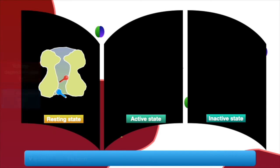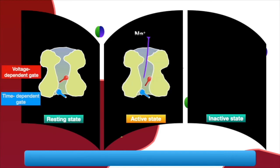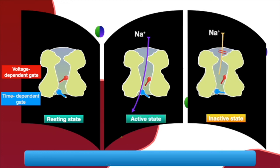T closes soon afterwards to inactivate the channel. V remains open while T is closed. This state is maintained as long as the surrounding membrane is depolarized.